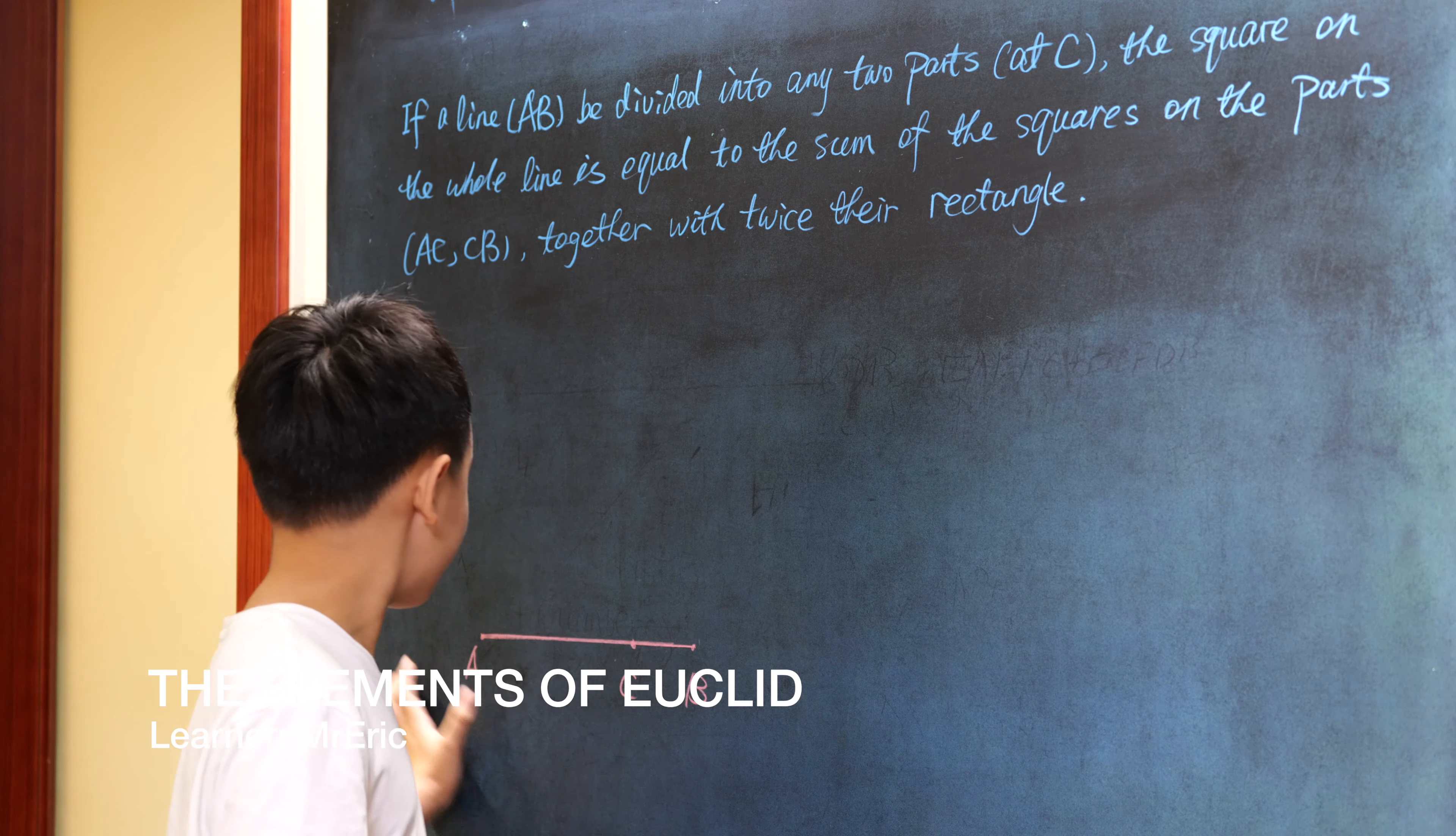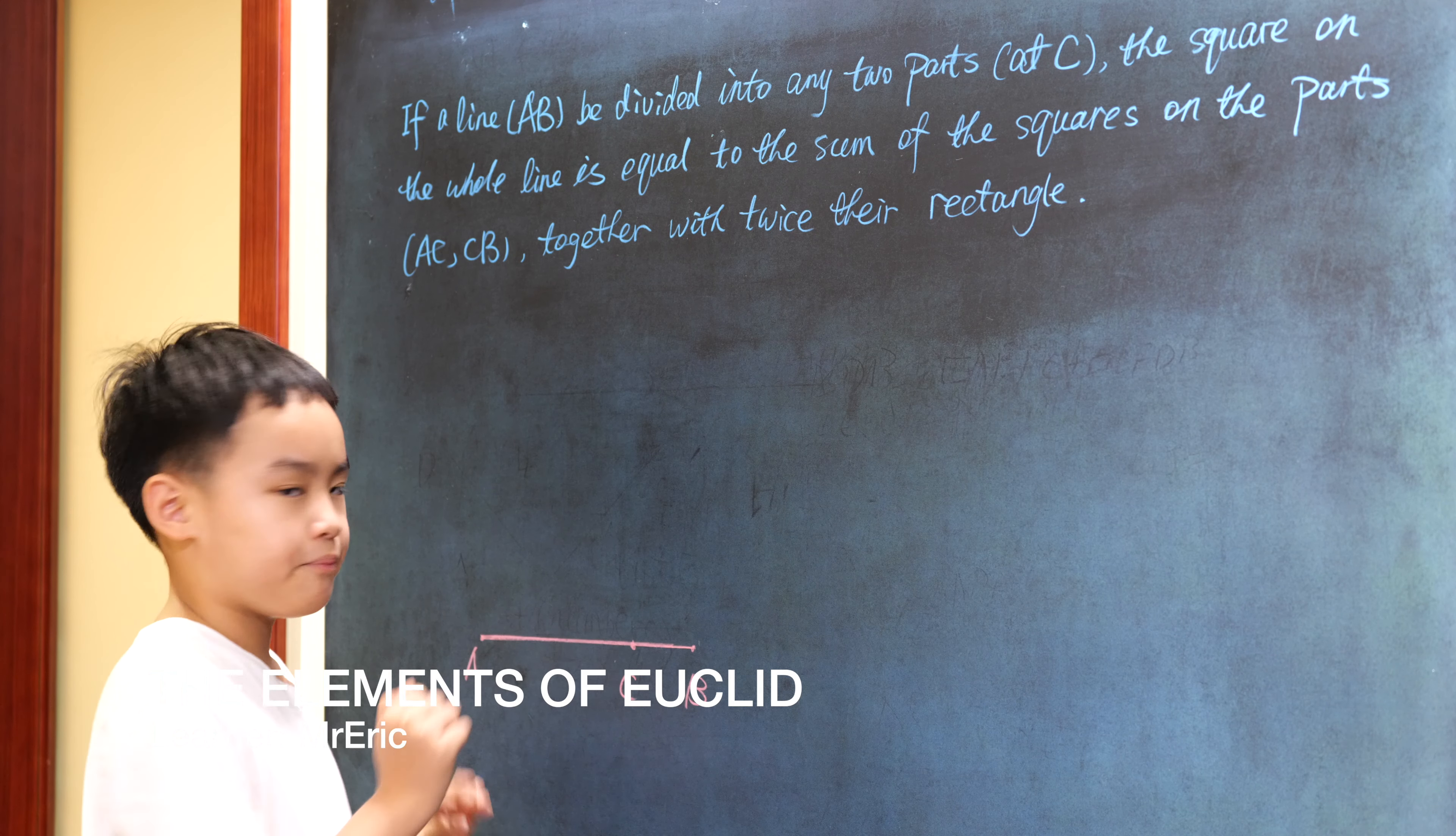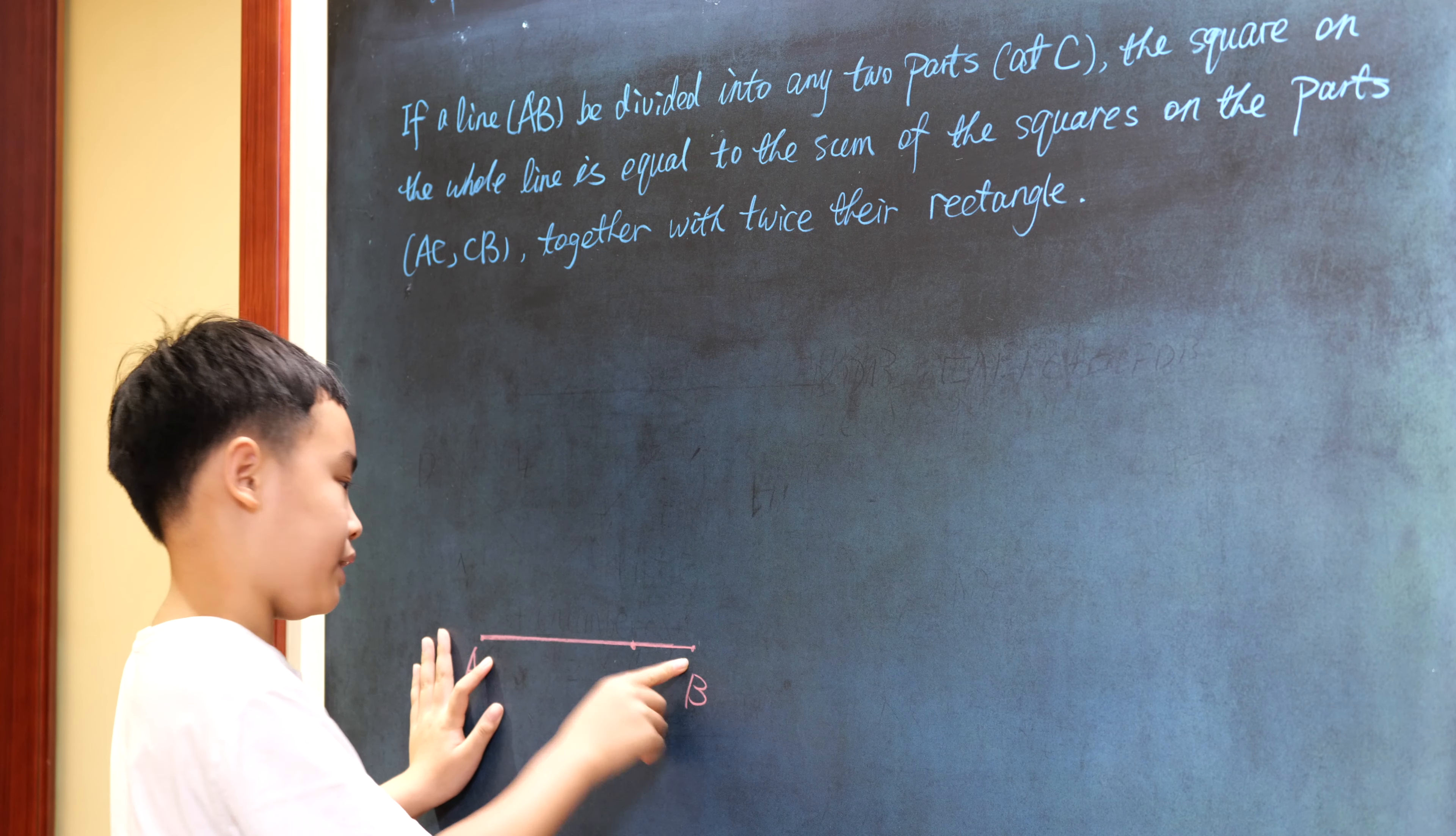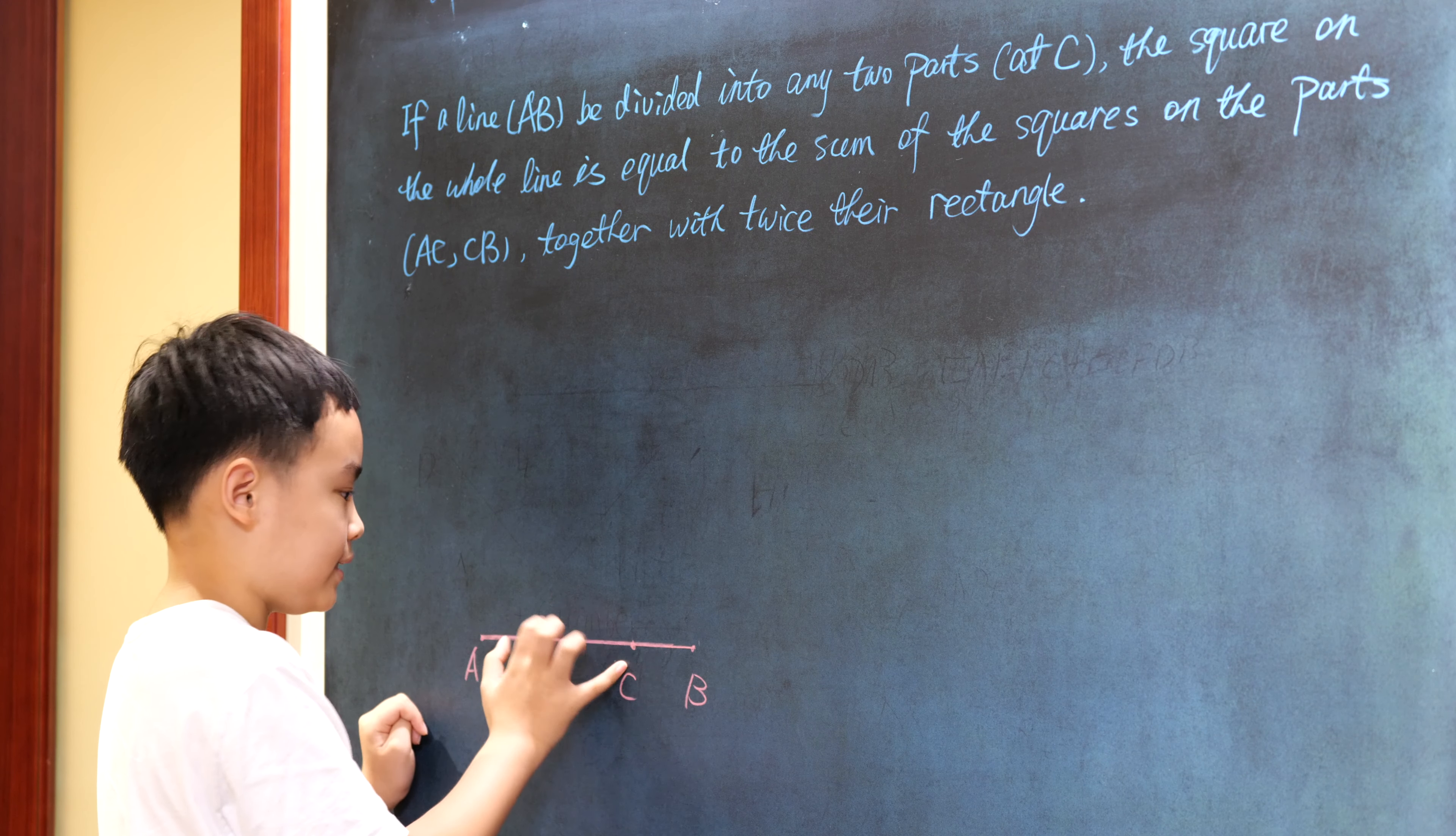To prove this theorem, first construct a square based on AB, then through point C make the line perpendicular to line AB, and lastly construct a square based on AC.